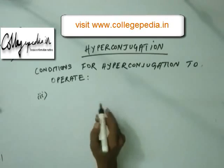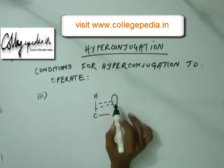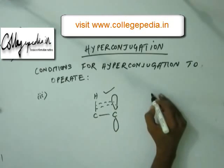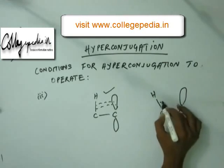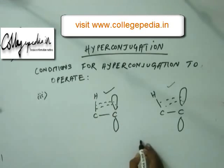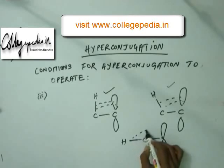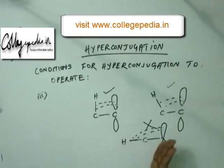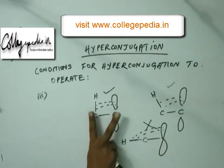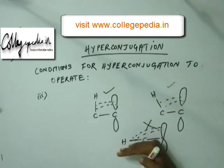The third condition for hyperconjugation to operate is that the C-H bond and the empty orbital must be parallel or almost parallel to each other. This condition applies to any kind of electronic transition, including resonance. If the C-H bond and the orbital are perpendicular — at a 90-degree angle — electronic transition does not occur at all. The best transition happens when they are parallel; as they deviate from parallel alignment, the extent of hyperconjugation decreases, and when they become fully perpendicular, hyperconjugation is zero.